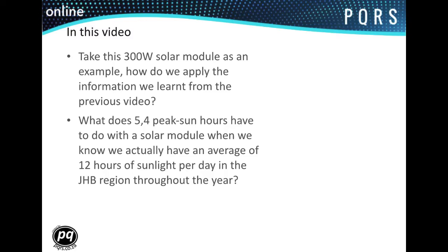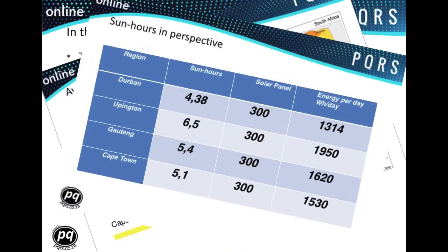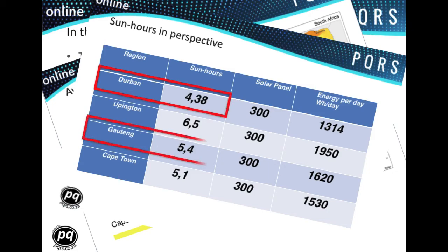We saw in the previous video that different regions have varying degrees of irradiation. You would remember seeing this slide. We also saw that places like Durban have 4.3 peak sun hours and Johannesburg has 5.4.